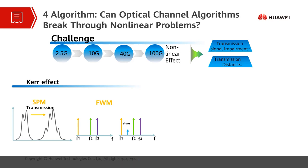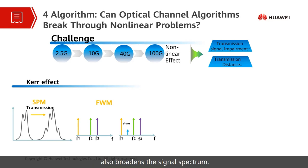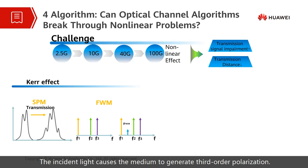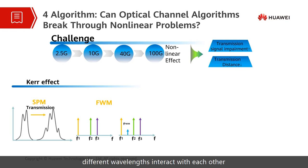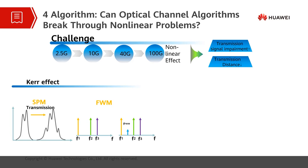Cross-phase modulation is the interaction of light in different channels, which also broadens the signal spectrum. Four-wavelength mixing (FWM): the incident light causes a medium to generate third-order polarization, and as a result, several phase-matched light waves of different wavelengths interact with each other to generate new light waves at other wavelengths.